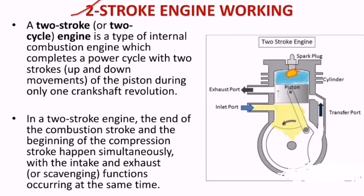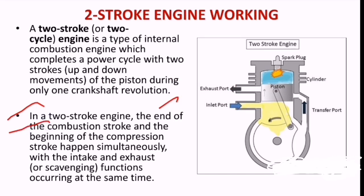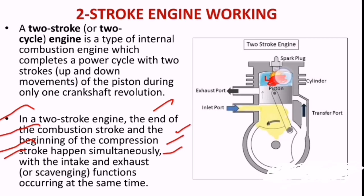Looking at the figure: inlet port, transfer port, and exhaust port. A two-stroke engine is a type of internal combustion engine which completes a power cycle with two strokes of the piston during only one crankshaft revolution, whereas a four-stroke engine requires two revolutions. In a two-stroke engine, the end of the combustion stroke and the beginning of the compression stroke happen simultaneously. When charge is compressed, the inlet port opens, charge enters and is compressed in the crankcase, then passes through the transfer port into the engine cylinder.